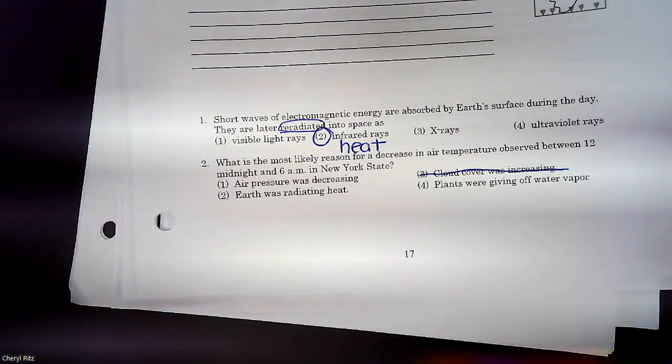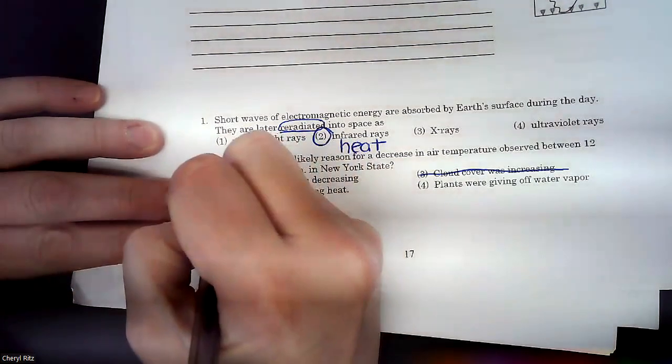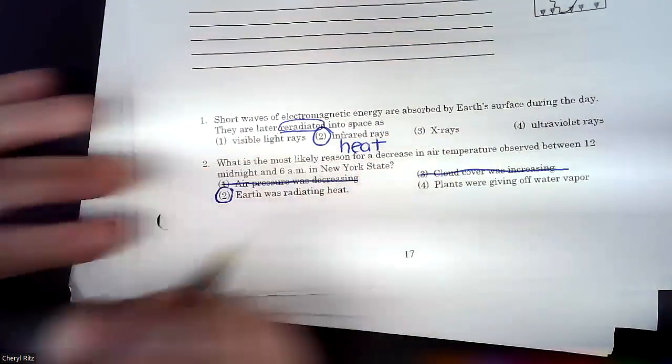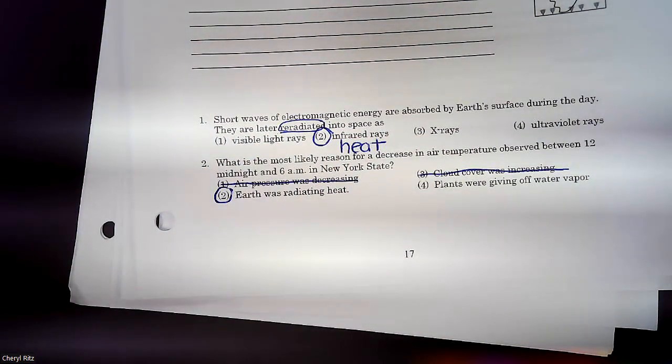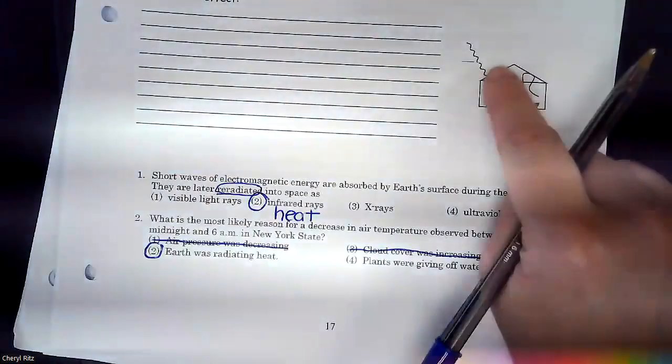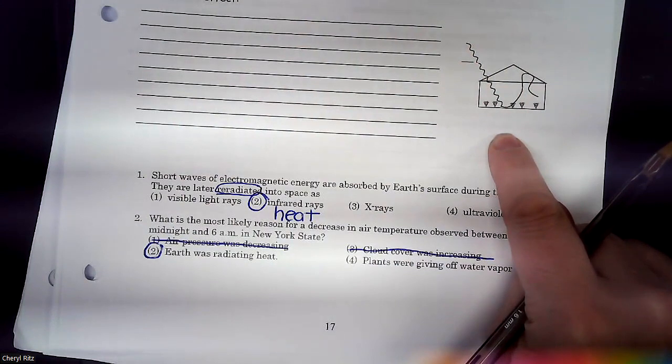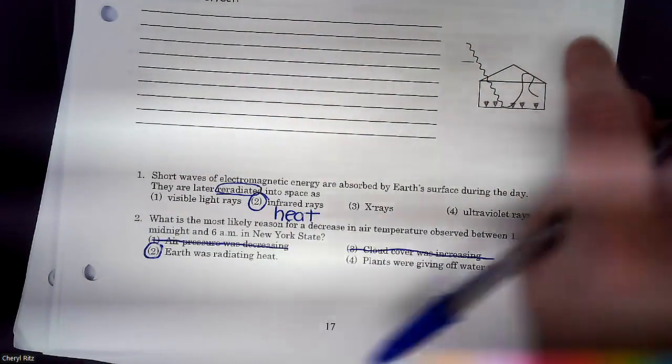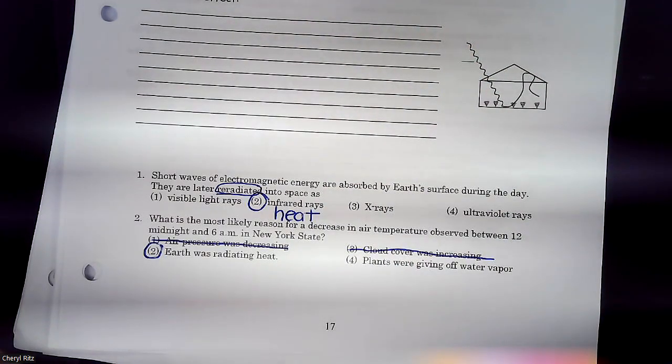Which one will cause the temperature to decrease from midnight to 6 a.m.? One, really? Did we talk about air pressure so far? No. Two. The earth was radiating. So we just talked about it here. So this picture right here. During the day, short waves come in. At night, the heat waves try to leave. What's going to let it get colder is if those heat waves are actually allowed to get out.